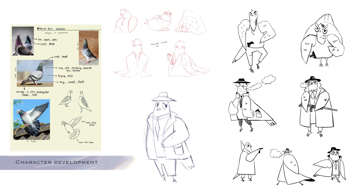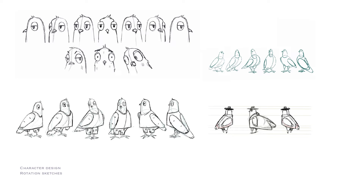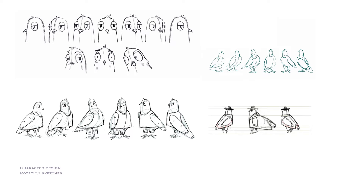During the pre-production process, I paid a lot of attention to character development because in the story there are a few different characters with different characteristics. For example, the main character Law, Drift Dancers, and Mafia Bandits. I analyzed realistic pigeons and worked on the style of the images so that all the characters were made in the same style. I also paid attention to rotation sketches to be able to start animating freely.